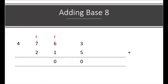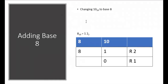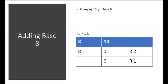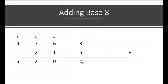Continuing: 7 plus 2 plus 1 carry equals 10. Since 10 is not part of base 8, we divide 10 by 8: 8 into 10 goes one time remainder 2, and 8 into 1 you can't, remainder 1. So 10 base 10 equals 12 base 8, meaning we write 2 carry 1. Finally, 4 plus 1 carry equals 5, and 5 is part of the base 8 system, so we write 5. Our answer is 5200 in base 8.